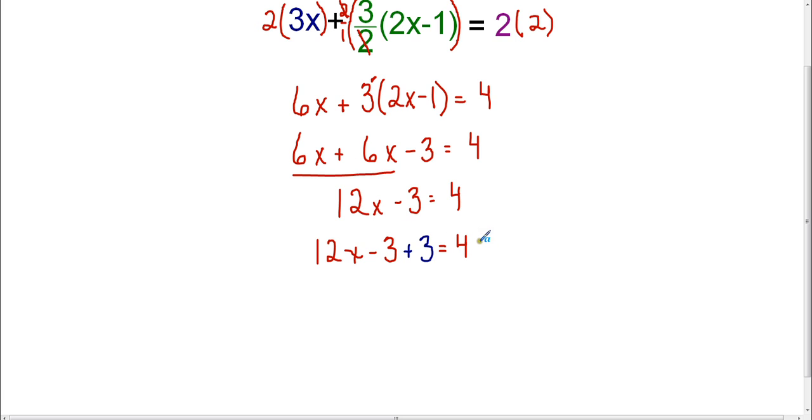So now I know that negative 3 plus 3 is 0. That's how I've gotten rid of the 3 there. So now I'm left with 12x equals 4 plus 3 is 7.